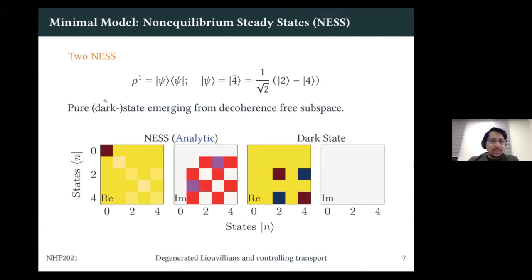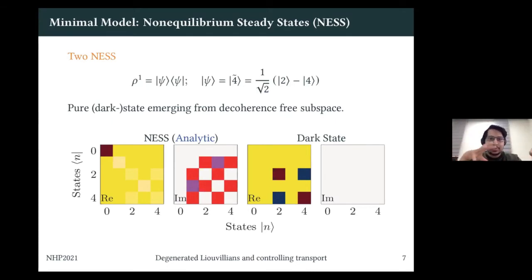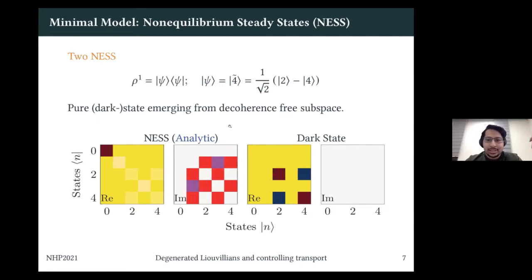Knowing the symmetry operators reduces the problem considerably. For four sites, the master equation perspective requires diagonalizing a 16×16 Louvillian matrix, but due to symmetries and decomposition into subspaces, you can actually find the steady states analytically in this case. The non-equilibrium steady state has a certain structure: the left panel shows the real part, the middle shows the imaginary part, and the right shows the dark state, all indexed in the site basis {0,1,2,3,4}.